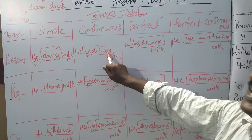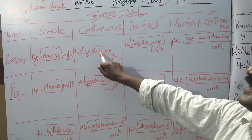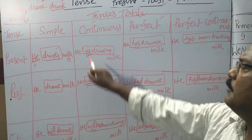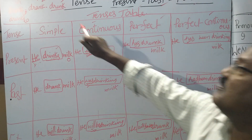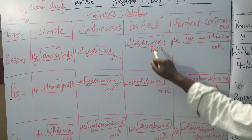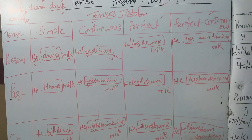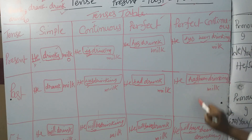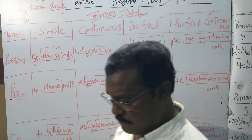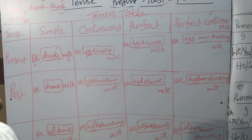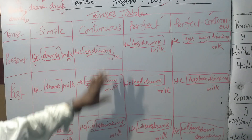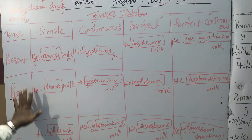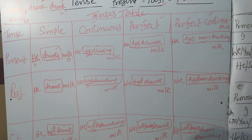Continuous tense means ing + B forms. Perfect tense: V3 form only — present perfect, past perfect, future perfect. Perfect continuous means been + V1 ing. Present/past/future have form we have to add. In this way, with the help of B forms we can write present, past, future continuous tenses, perfect tenses, and perfect continuous tenses. For simple tenses of present, past, future, you need not use any B form or have form.